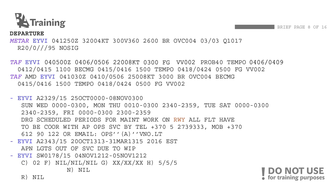The other thing I need to check is NOTAMs — Notices to Airmen — which tell me about special conditions at the airport, such as a closed runway, a closed taxiway, anything related to operations that might inflict damage to the aircraft, or aerodrome operating hours. From the NOTAMs here, I can see that there are some planned times when taxiway lights will go out due to work in progress.